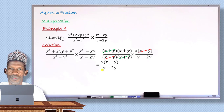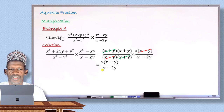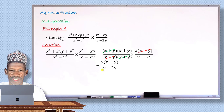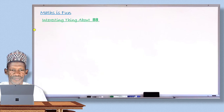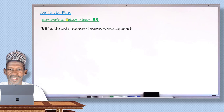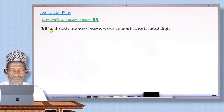With that, I have come to the end of this lesson. I hope with the few examples given, you will be able to perform multiplications of two algebraic fractions. Now let me move to the last segment — the fun fact — and explain what is interesting about the number 88.